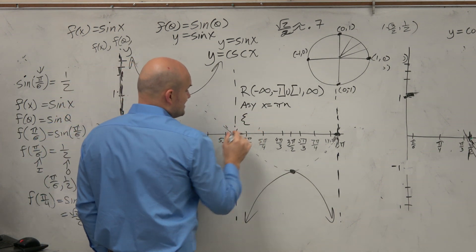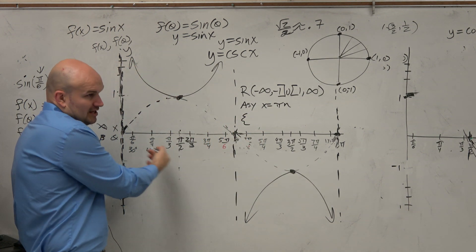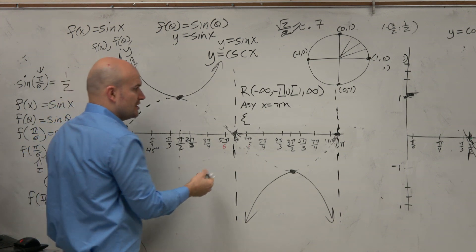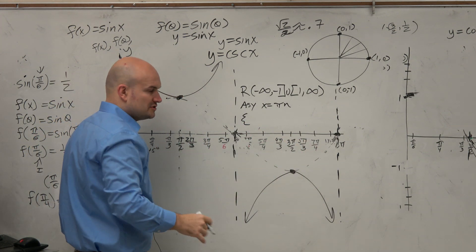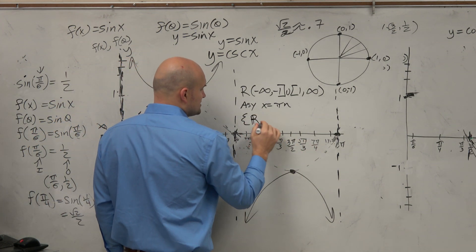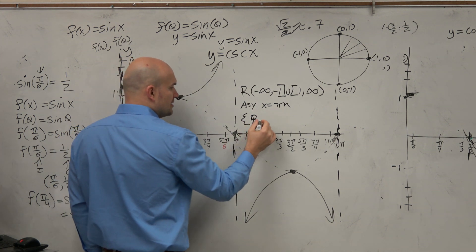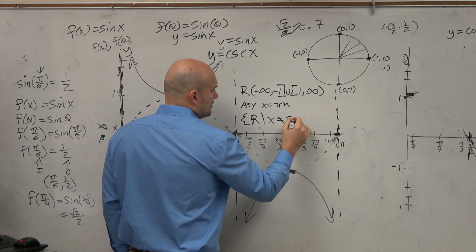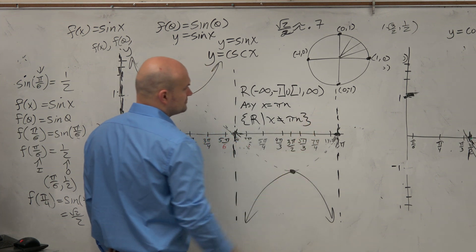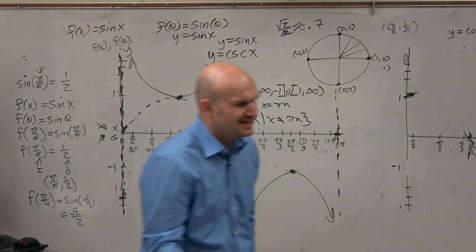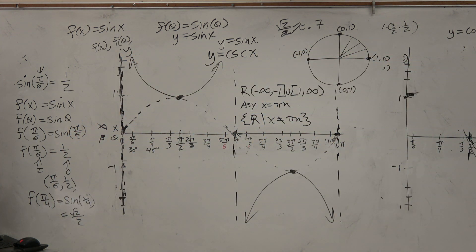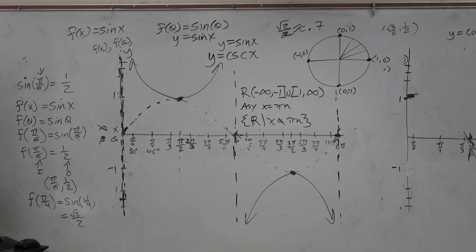And then if we want to look at the domain, it's going to be all real numbers except for where those asymptotes occur. So I'm not going to be, don't be too concerned about the set notation for this. But domain is going to be all real numbers such that x cannot equal πn. Just in case you guys see it, I'm not going to ask you guys to write the domain for this. My main concern, though, is for you guys to find the asymptotes.